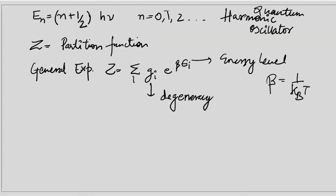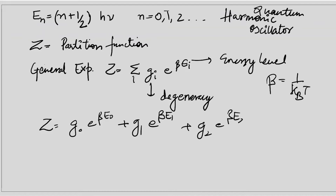Beta is the constant equal to 1 over k_B T, where k_B is the Boltzmann constant and T is the temperature. These are some general things we need to know before solving the question. Moving on, we expand this summation: when we put n=0 we get g_0 e^(beta E_0), then g_1 e^(beta E_1), g_2 e^(beta E_2), and so on. For a particular value of n we get a unique value of energy, so all the degeneracies are equal to 1.